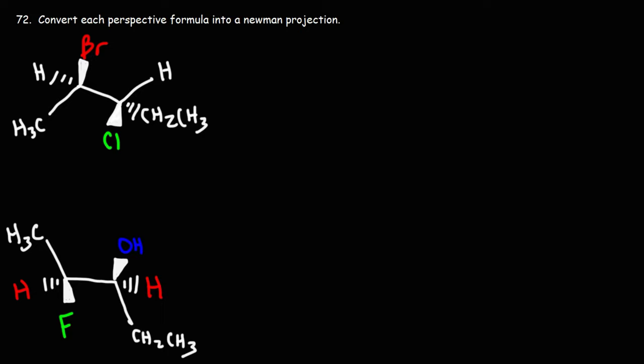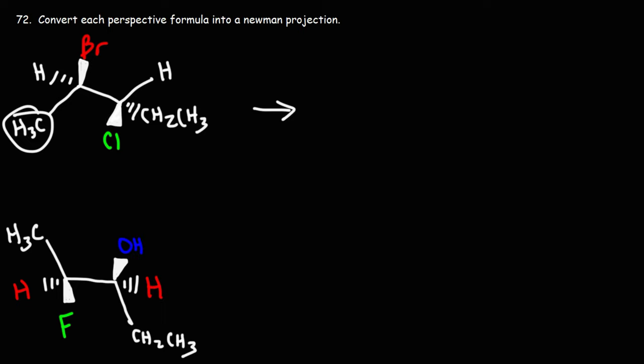Convert each perspective formula into a Newman projection. Let's start with the first example. Now let's look at these two groups — the ones that are not on a wedge or a dash. Notice that the methyl and the hydrogen are anti to each other.